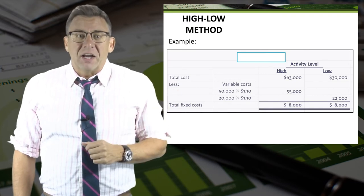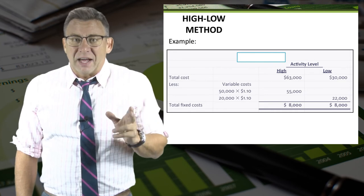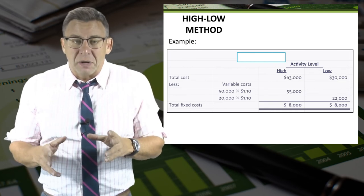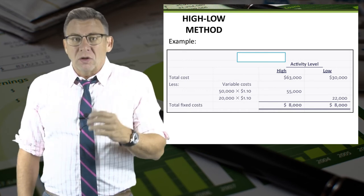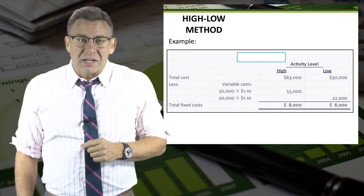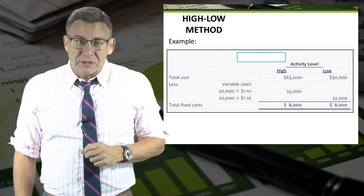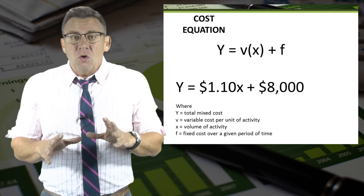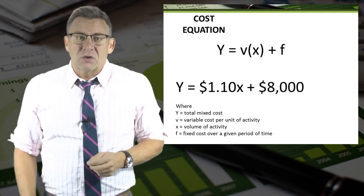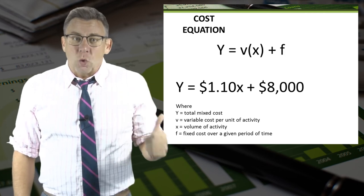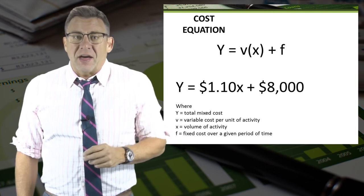Here you can see both methods performed. The high cost of $63,000 minus the high volume of 50,000 miles times $1.10 per mile equals $8,000 of fixed costs. We get the same number using the low amounts. Since we know the variable cost per unit and fixed costs, we can write the cost equation: y = $1.10x + $8,000.